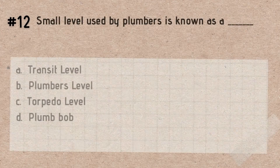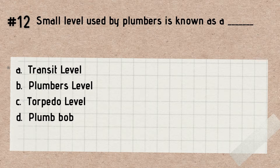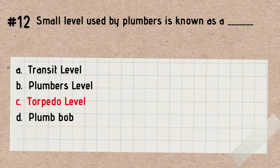Question number 12. A small level used by plumbers is known as a blank. A. Transit level. B. Plumbers level. C. Torpedo level. D. A plumb bob. Answer: Torpedo level. Remember, a torpedo level is a small level used by plumbers. It is a spirit level designed for use in tight spaces.